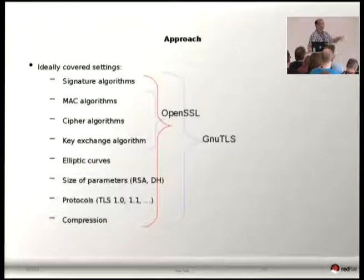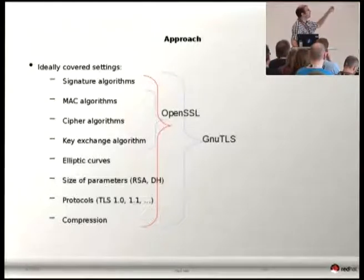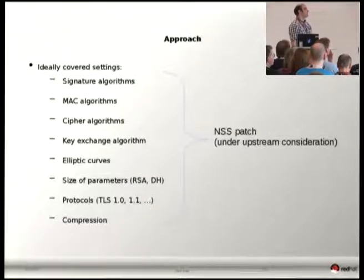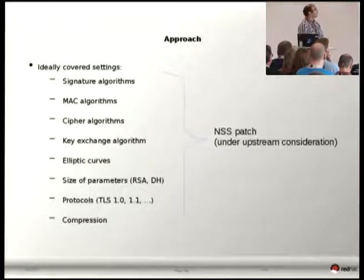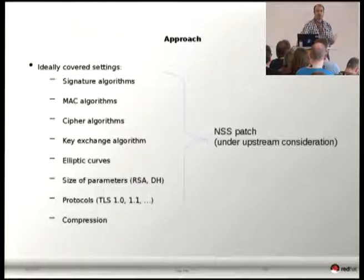Although we plan to extend OpenSSL as well — the reason, if you don't know already, is that OpenSSL doesn't allow much freedom in what's specified in the cipher suite string; you can only specify the cipher suite, not any other parameters. We also have a patch for NSS, which is the TLS library used by Firefox, to cover all these parameters. It's currently under upstream consideration and we haven't included it yet in Fedora.